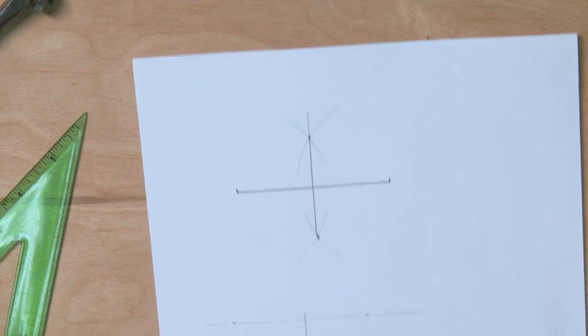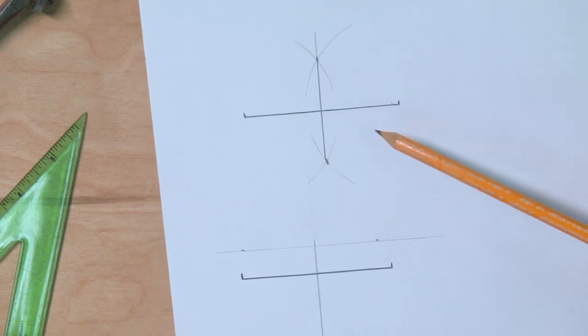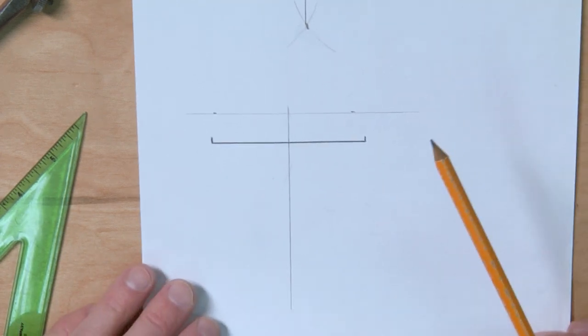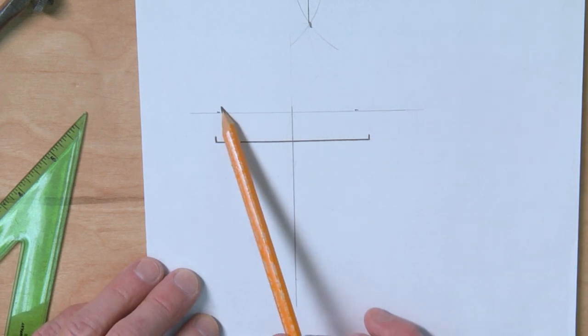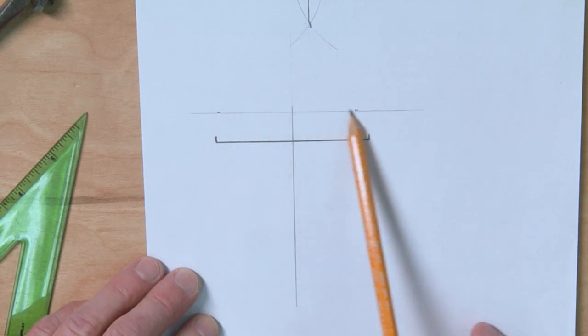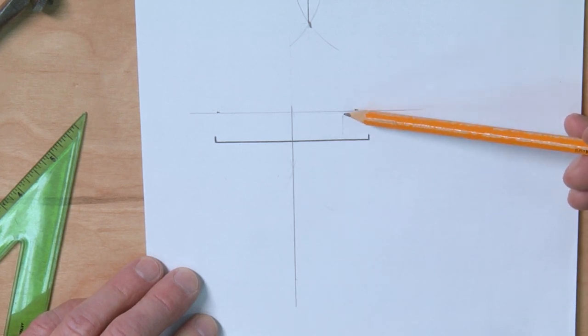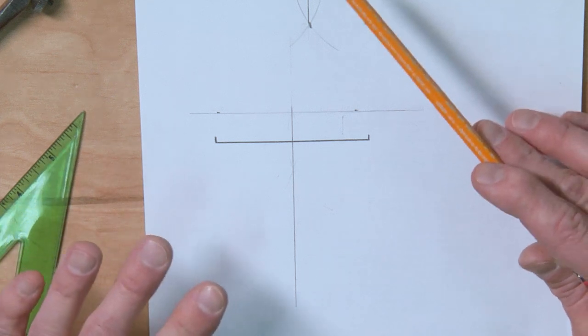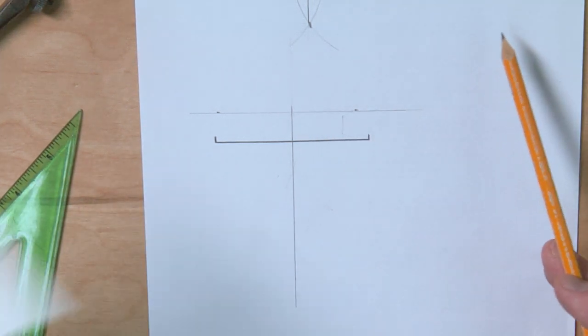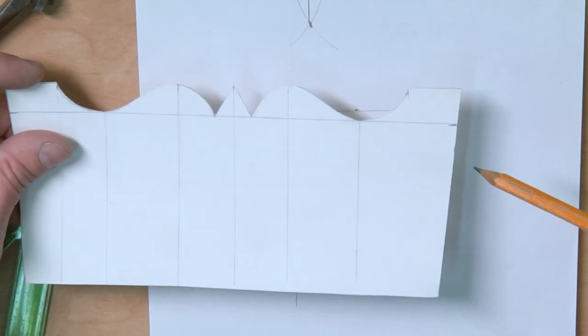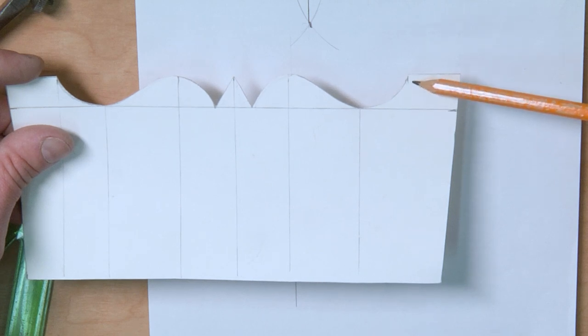Alright, so the next step is I've done the same thing. I just erased some of these lines here so it doesn't get too confusing and bothersome. And then you'll notice I have a line going across here. Now I think I measured this distance 5/8, but again this is just a sample, an example we're doing, that distance doesn't really matter. What we're trying to distinguish right now is the height of the arc.